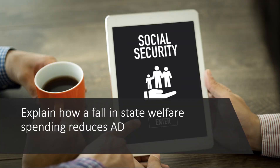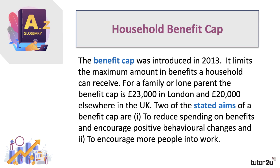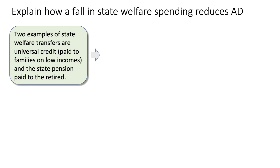Here's a second question: explain how a fall in state welfare spending reduces aggregate demand. In the UK, the government introduced what's called the benefit cap, originally brought in in 2013, which essentially caps the amount a household can receive each year in welfare benefits — £23,000 in London and £20,000 in the rest of the UK. One of the aims is to reduce spending on welfare and also to try and encourage people back into work.